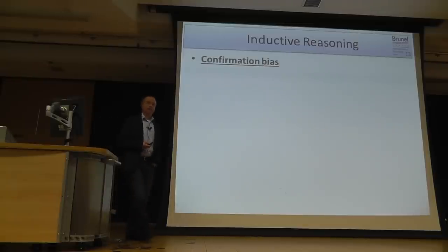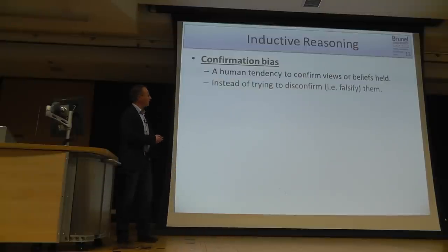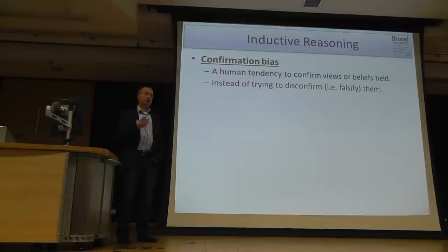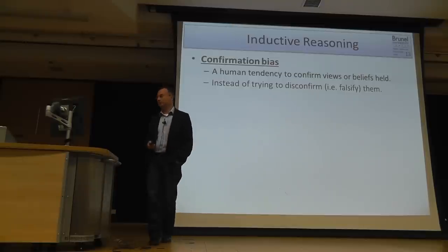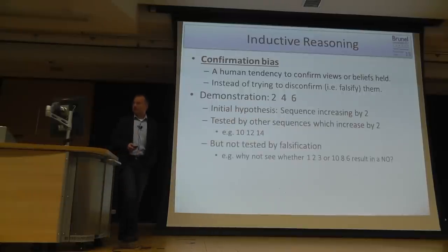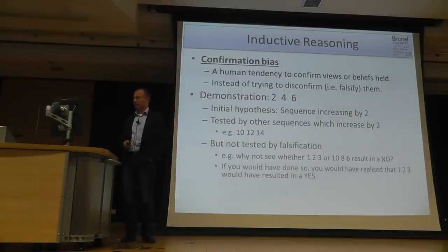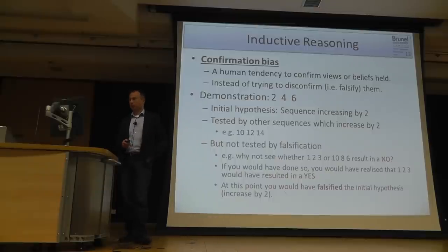Because the sequence is suggestive of a rule that it increases by two, you immediately get that hypothesis and produce experiments that support it. That's exactly what Popper meant. This is called the confirmation bias — we have a very strong tendency to confirm our initial beliefs rather than try to disconfirm or falsify them, although that approach may give us much more information.